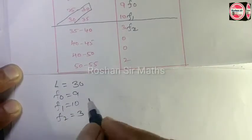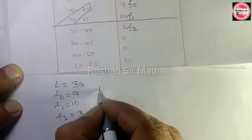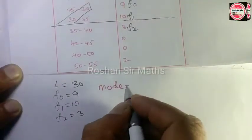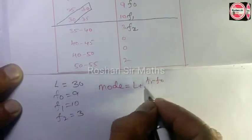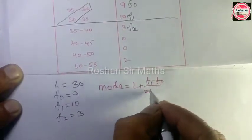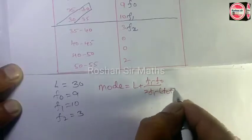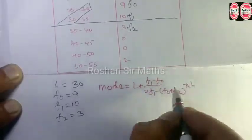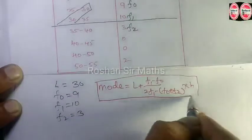अब इसका Mode का formula लिखेंगे। Mode is equal to L plus (F1 minus F0) by (2F1 minus F0 minus F2) into H. यह Mode का formula है।